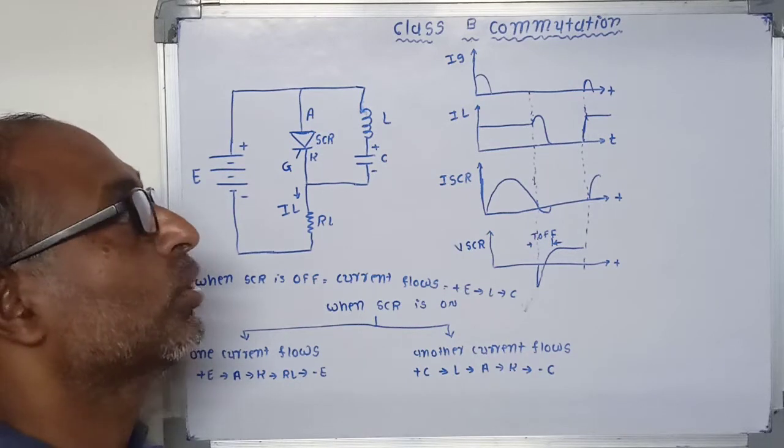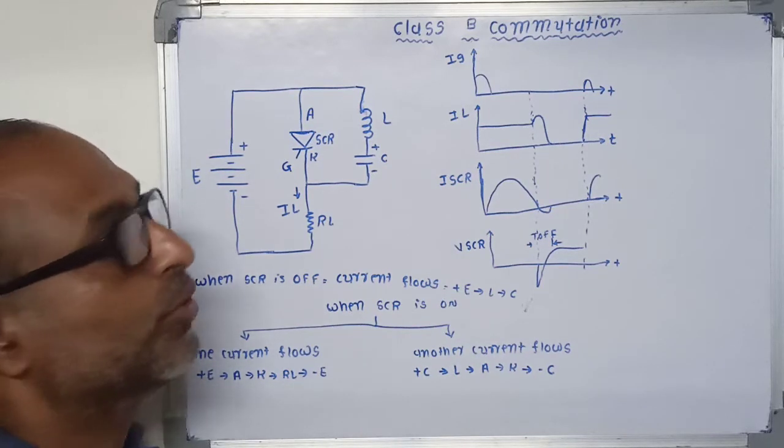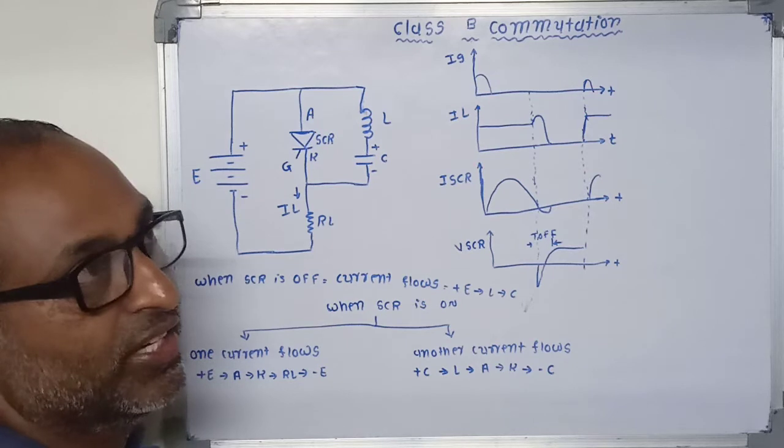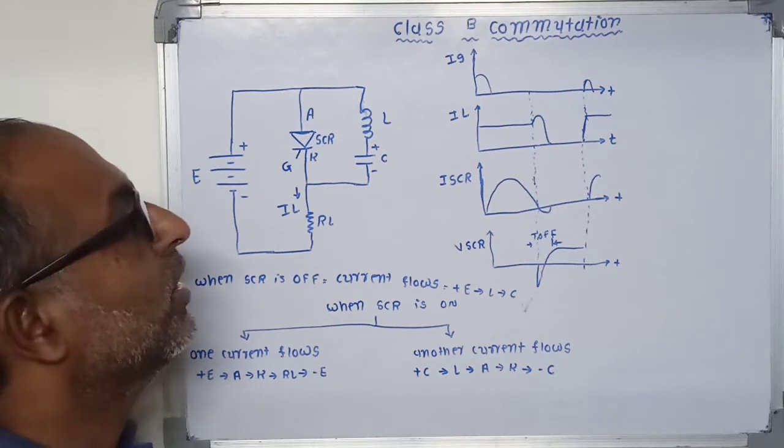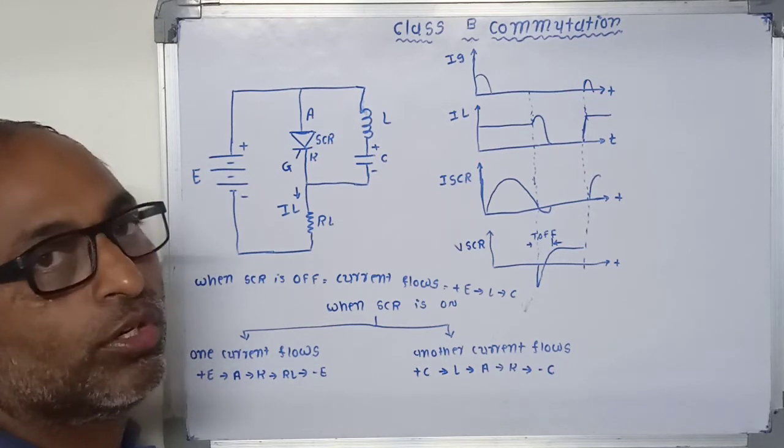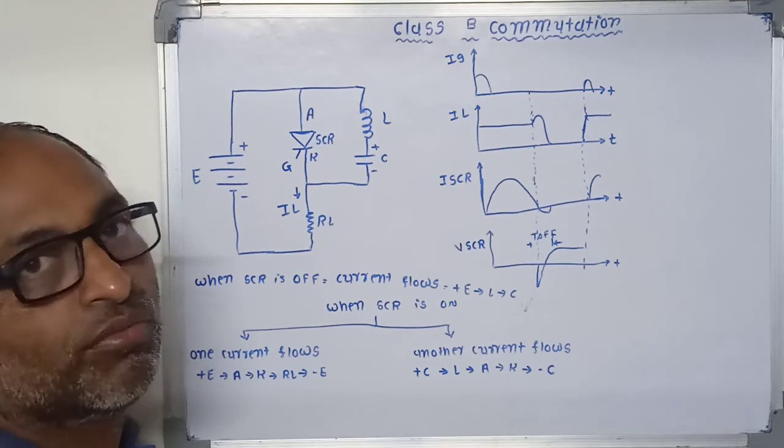Class A and Class B both are self-commutating circuits. When we turn on the SCR, it will turn off automatically.